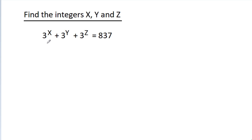In this video, we have given that 3 power x plus 3 power y plus 3 power g is equal to 837. Then we have to find the integers x, y, and g.